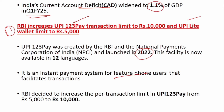UPI 123Pay is an instant payment system for feature phone users that facilitates transactions. The per-transaction limit has now been increased from Rs. 5,000 to Rs. 10,000.